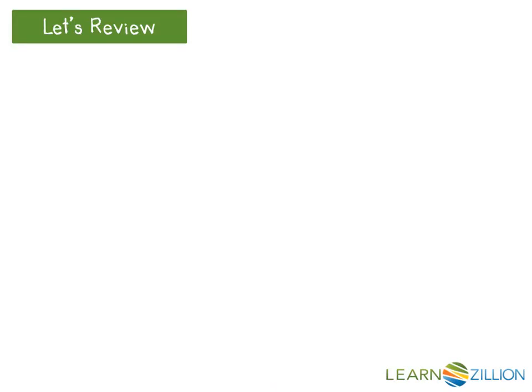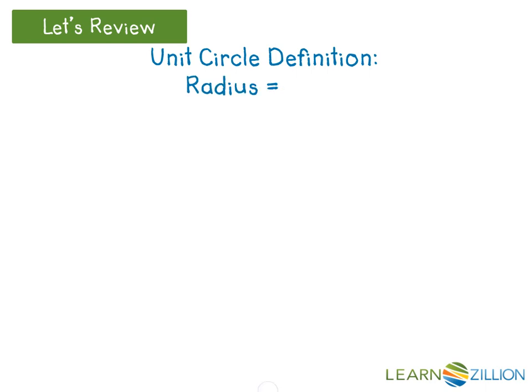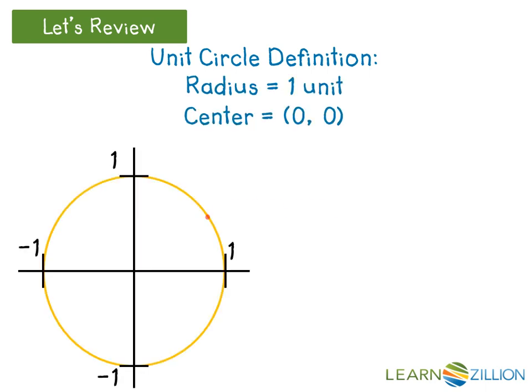Let's review. The unit circle is a circle with a one unit radius that's centered at the origin of a coordinate plane, and every point on the circle represents the values of cosine, then sine, for each angle that they reference.